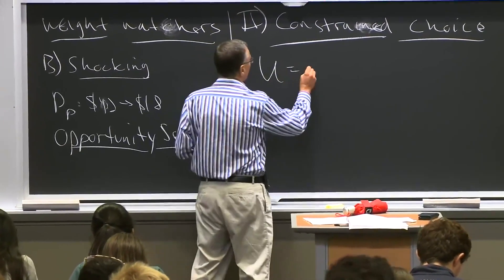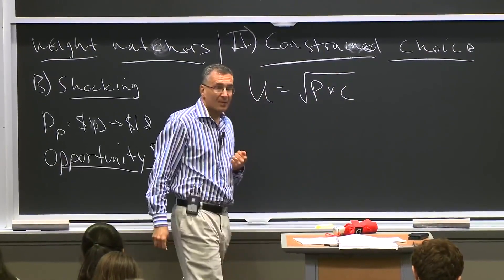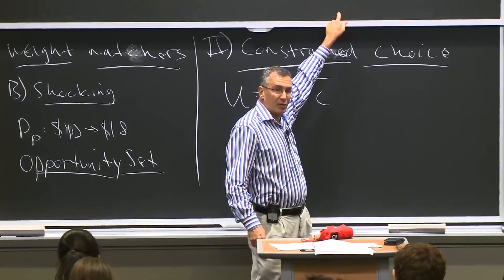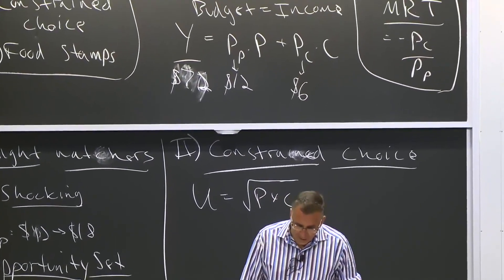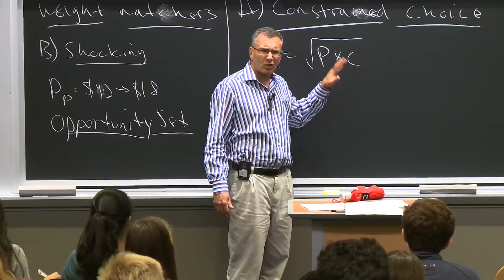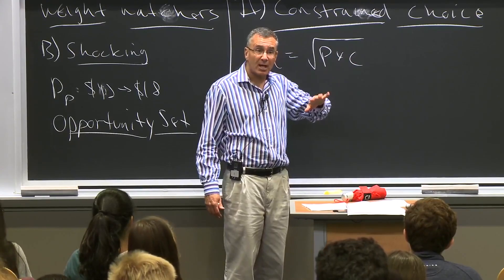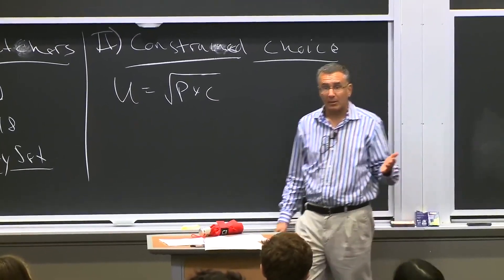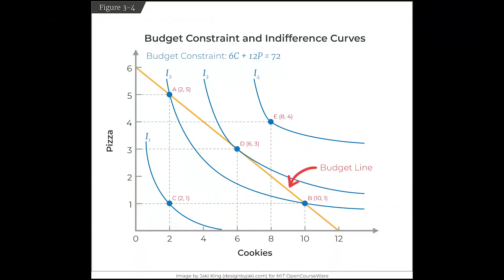Consider the same utility function from last time: utility equals the square root of p times c. With $72 income, $12 price of pizza, and $6 price of cookies, Figure 3.4 shows the budget constraint running from six pizzas to 12 cookies, along with indifference curves I1, I2, I3, I4 derived from this utility function. You can solve — and will derive in section on Friday — how to literally draw indifference curves from the utility function. Take my word for now that these indifference curves represent this utility function.